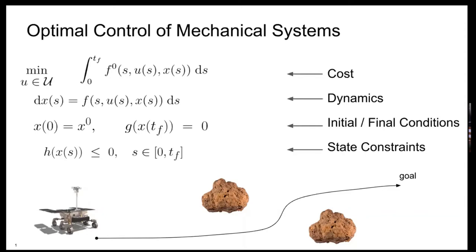What do I mean by optimal control in general? I'm given some dynamics represented by a vector field f, and these dynamics provide an evolutionary equation for the state variable x, and I can act on the system by some control that I denote here. Usually we are given some initial condition, and we would like to steer the system towards a given final condition as well, respecting some given state constraints in the integration interval, and also trying to optimize some performance criteria given by integral costs over the space of our possible action or control.